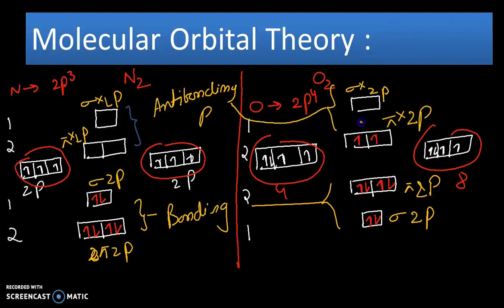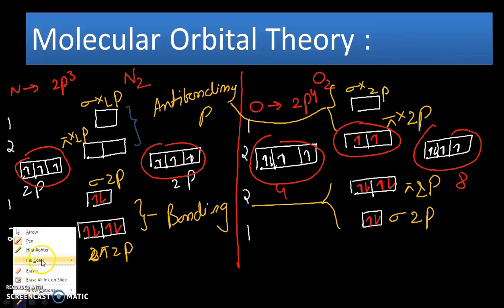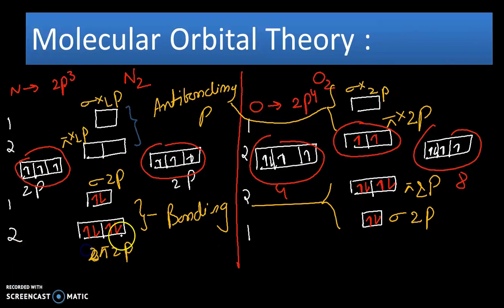What we see is that in nitrogen there is no unpaired electron, while in oxygen there are two unpaired electrons in pi anti-bonding orbitals. How to write the electronic configuration? In case of nitrogen it is sigma 2p2, pi 2p4.